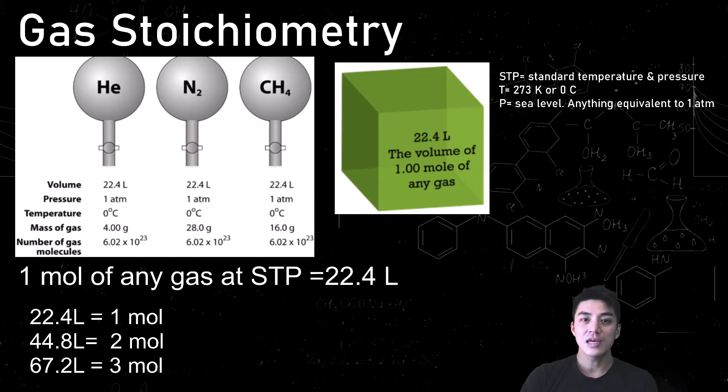Because one mole of any gas at STP takes up 22.4 liters of volume, you can take a lot of shortcuts whenever you're doing gas stoichiometry problems.